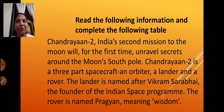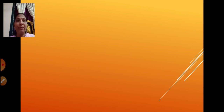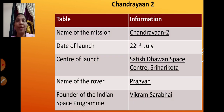Now, whenever you are doing any writing skill related to information transfer, the first important thing is to give a title — whether you are transforming from verbal to non-verbal or non-verbal to verbal, a title is of utmost importance. When converting this paragraph to a table, the title is very clear: it is talking about Chandrayaan 2, so the title of our information transfer will be 'Chandrayaan 2.' In the table, the left-hand column has: name of the mission, date of launch, centre of launch, name of the rover, and founder of the Indian space program. The underlined spaces are the blanks which need to be filled.